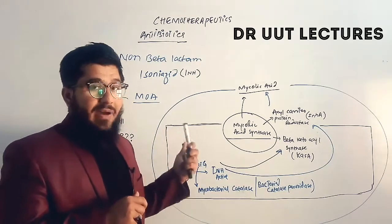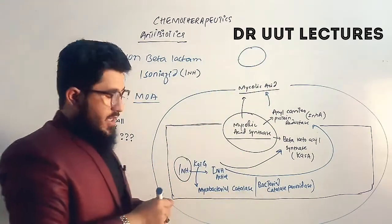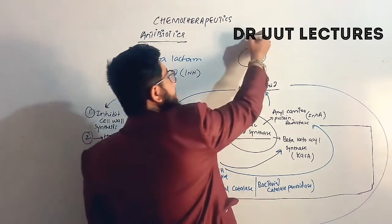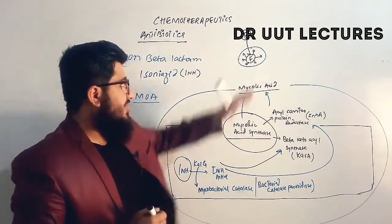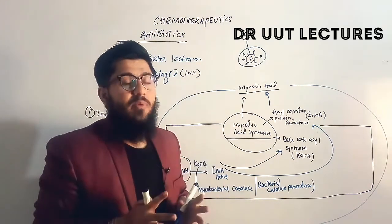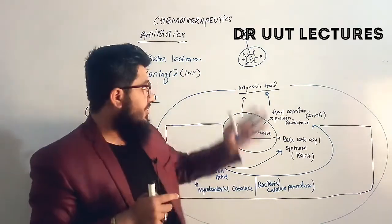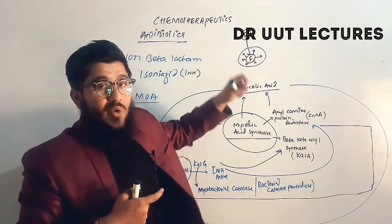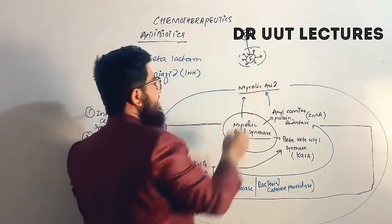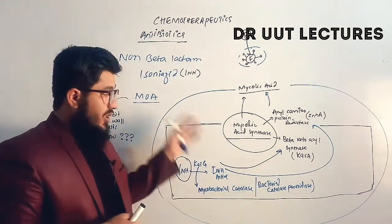The bactericidal mechanism works as follows: if there is no cell wall available, the fluid surrounding the bacterium will diffuse in. As fluid enters, it exerts osmotic pressure after accumulating inside the bacterium. This pressure acts on the cell membrane, which now has no structural support — normally provided by the cell wall. The membrane can no longer withstand this pressure, resulting in lysis. This is how isoniazid shows its bactericidal mechanism of action.